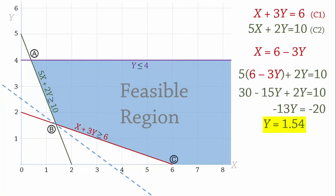Substituting that y value into the x equation, we have x equals 6 minus 3 times 1.54. That is, x equals 1.38. So the coordinates at point B are x equals 1.38 and y equals 1.54.